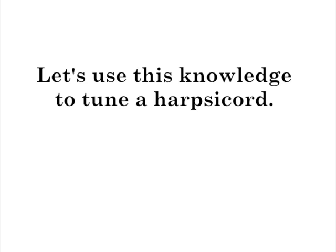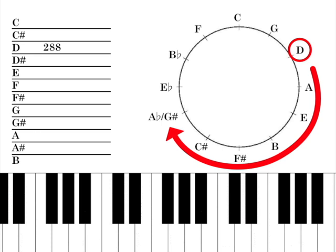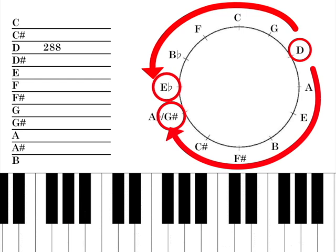Start with the pitch D, which we will set at the frequency of 288 Hz using a tuning fork. Using our ears as the finely calibrated instruments they are, we will use the harmonic series to tune up and down fifths from that reference pitch. We will travel up clockwise around the circle of fifths to G sharp, and counterclockwise to E flat, tuning every note in the 12 tone chromatic scale as we go. Bear with me because this will take some time. If you want to skip ahead, do so now.